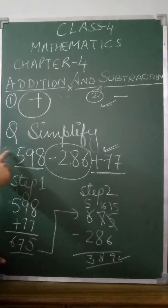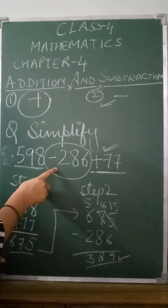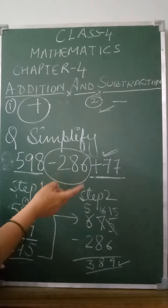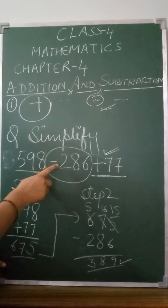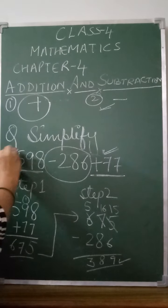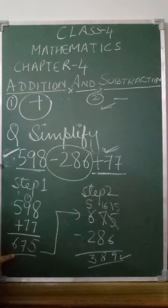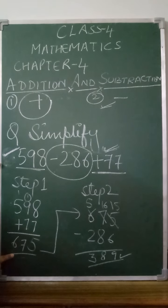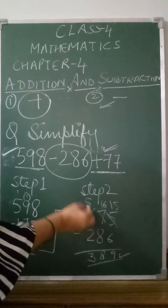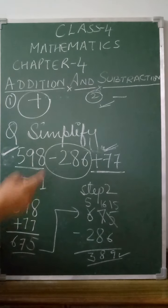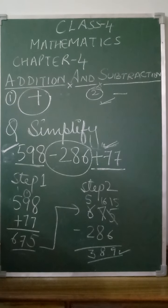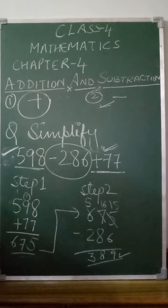I hope you understand with these two examples. In the first example the third number was negative; in this example the second number was negative and the third was positive. Either way, first we add the positive numbers, then we subtract. Make sure you don't change the signs of the numbers — if you do, the answer will be totally wrong.